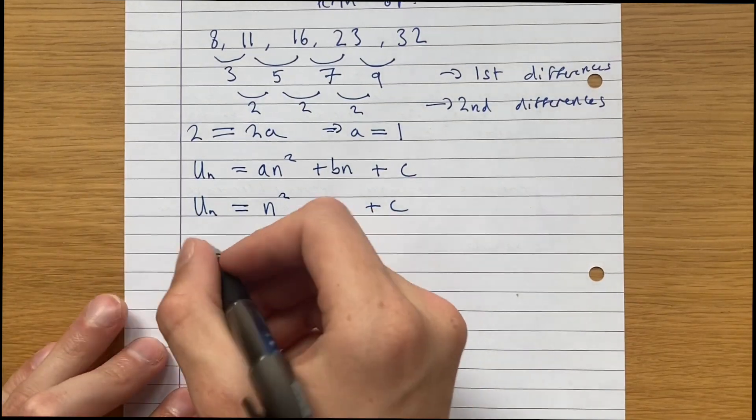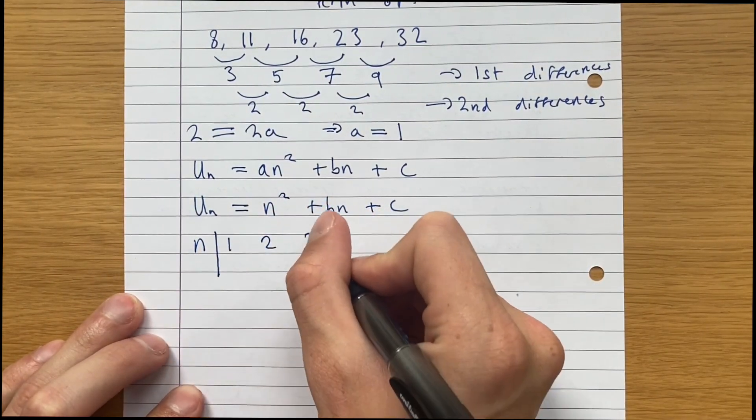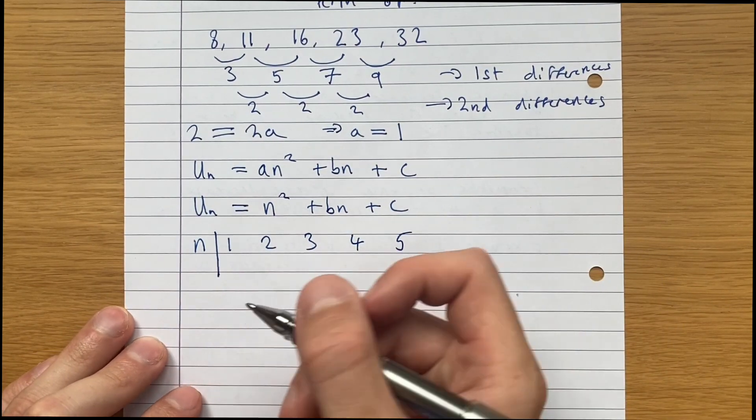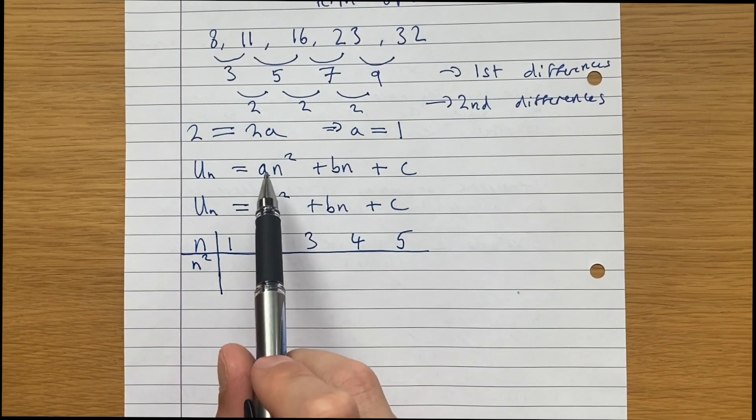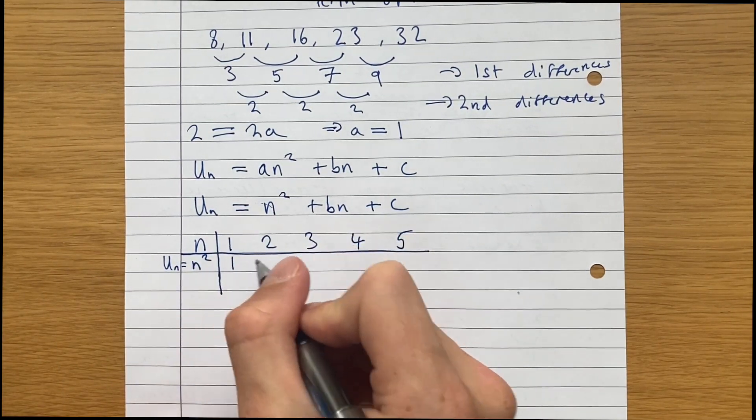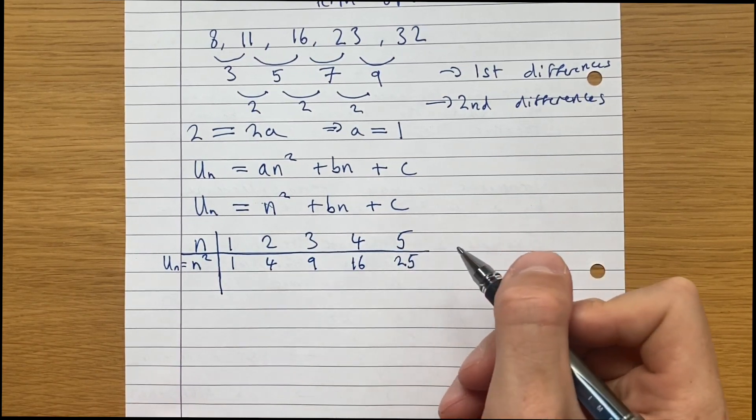So if we write out, if we do a table again, so n: 1, 2, 3, 4, 5. And n squared, we know that a is 1. If un is n squared, we just get 1, 4, 9, 16, 25.